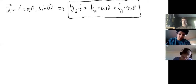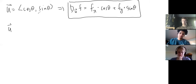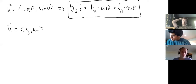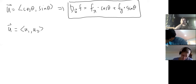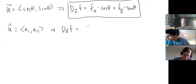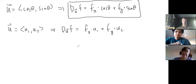Here's another way to write it: sometimes you won't be given cosine and sine — you'll just be given u1 and u2. You don't necessarily know what the angle is; you just have the two components of the unit vector. In that case, replace cosine and sine with u1 and u2: the x-derivative times u1 plus the y-derivative times u2. It's a pretty simple formula.